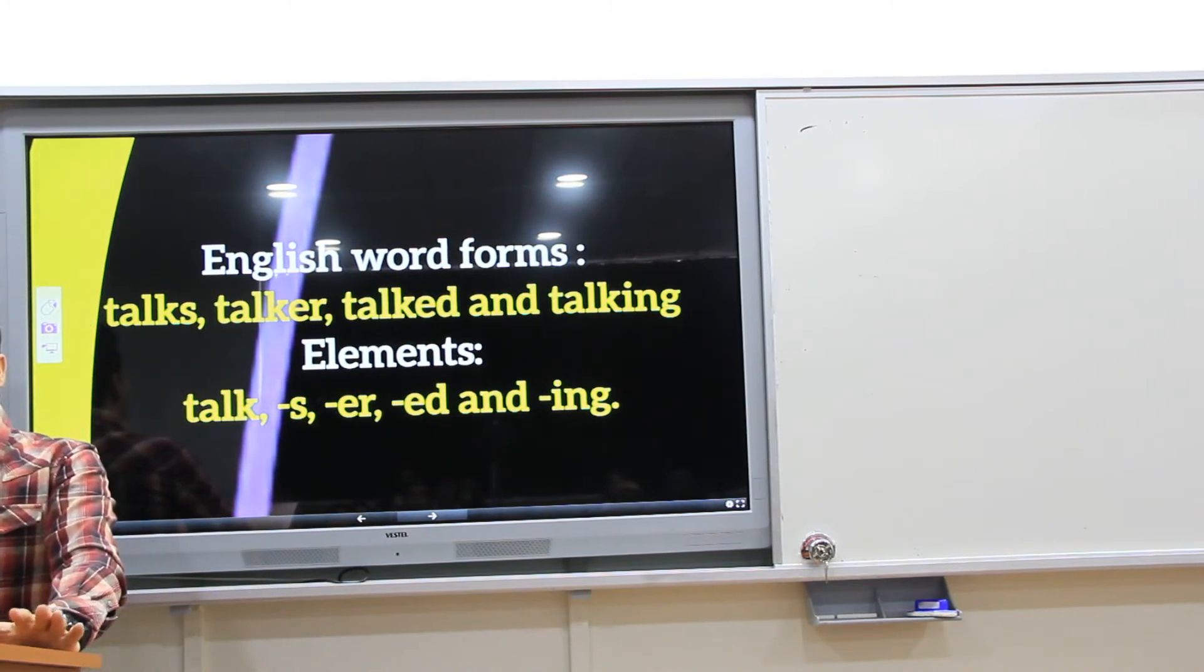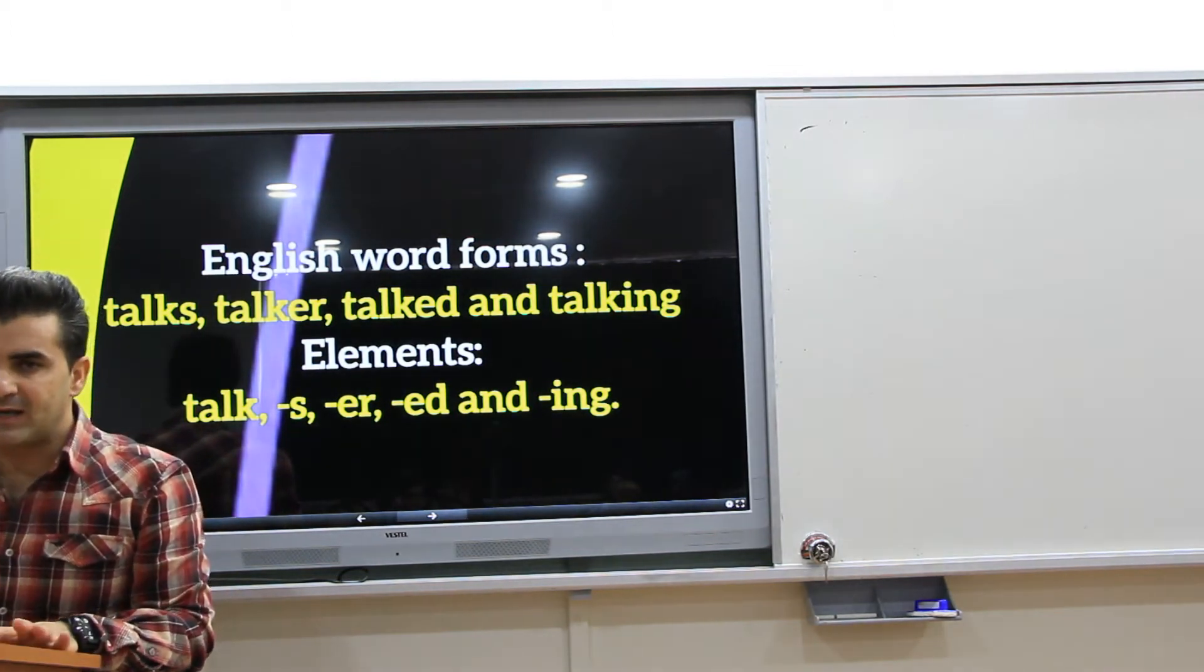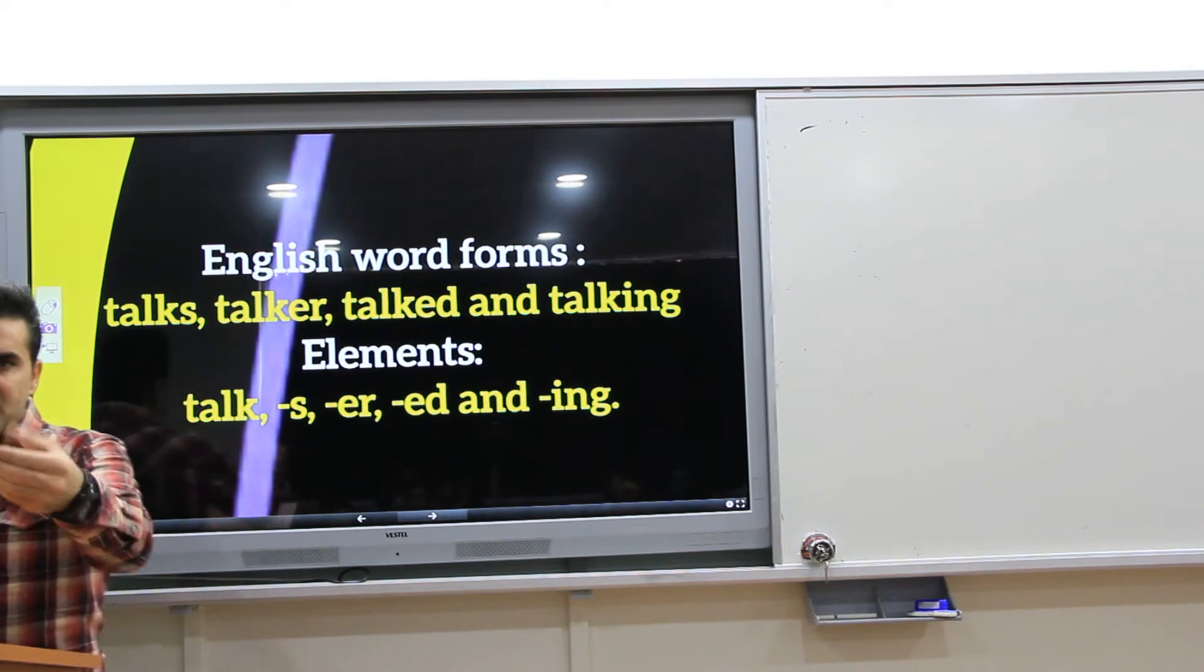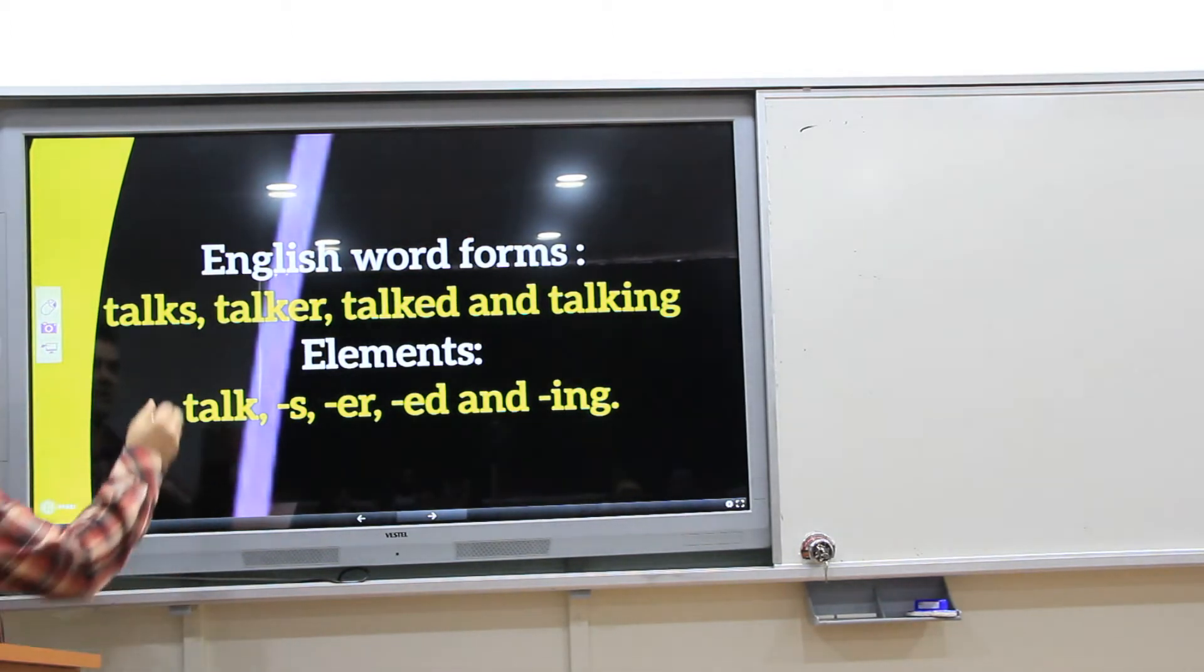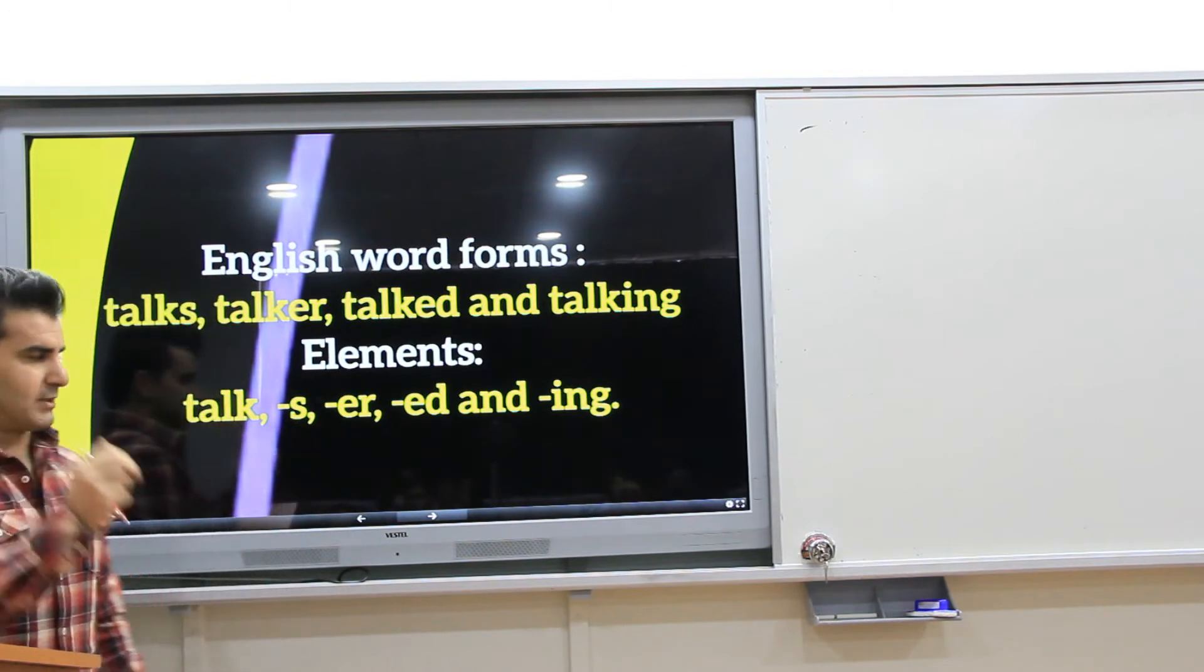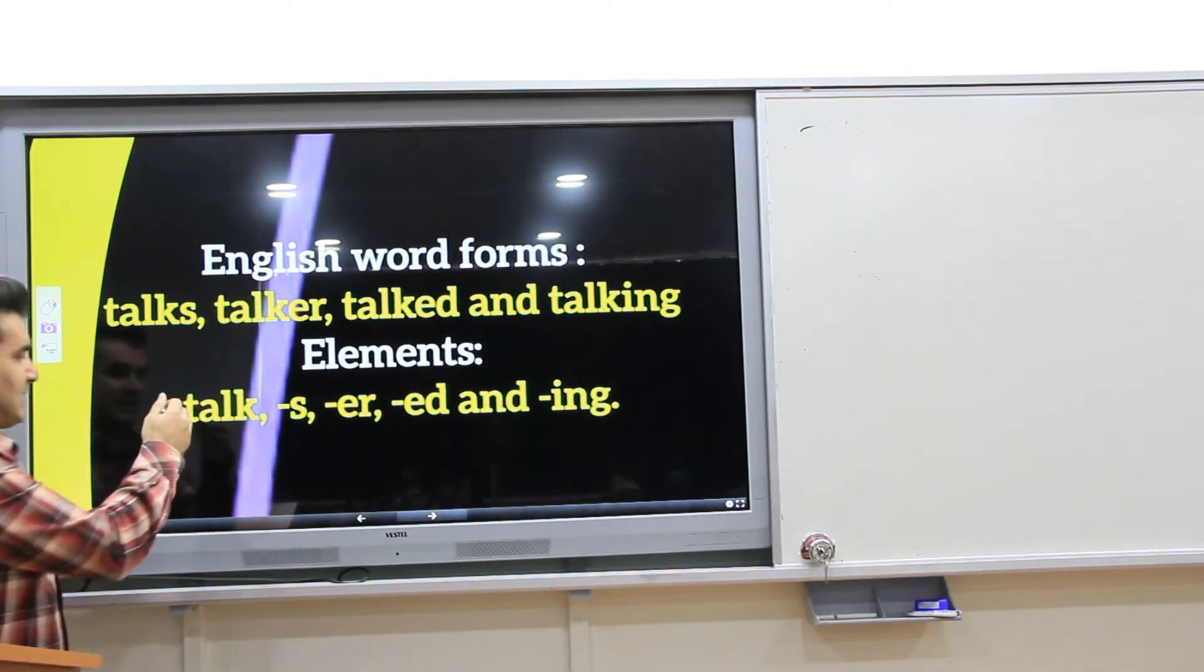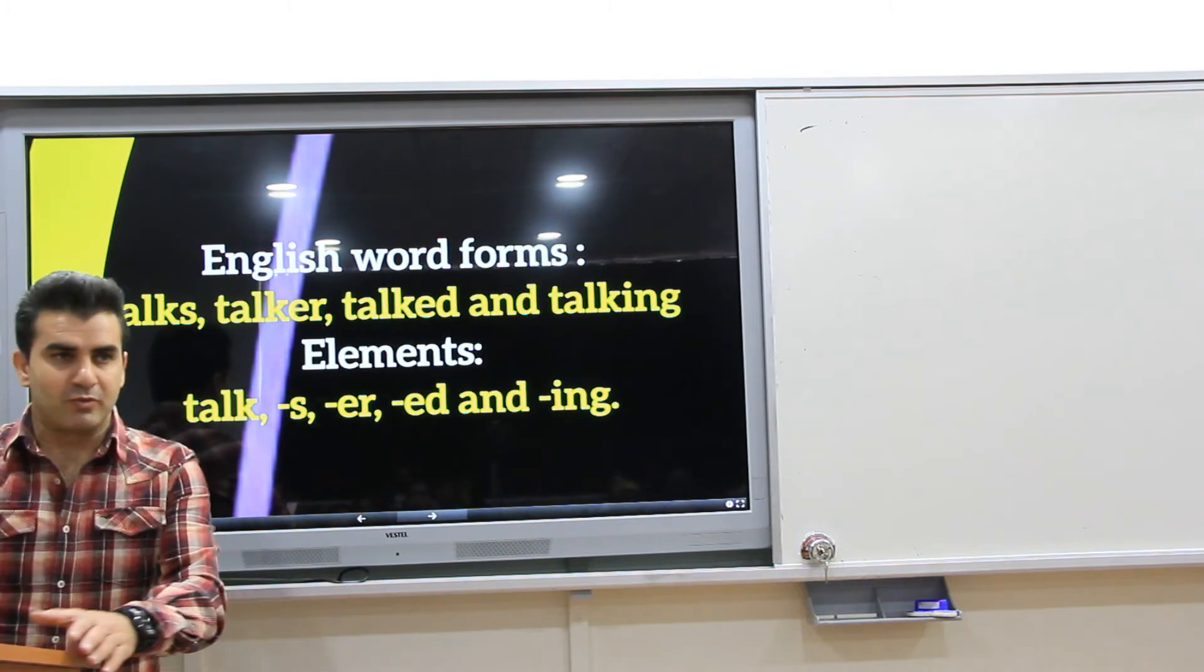Bu morfimler dediğimiz zaman, artık morfimler, bir dindeki farklı elementlerdir. Yani o gördüğümüz farklı yapıların her biri morfim oluyor. Tabi, morfimin bir alt basamağına gittiğiniz zaman, fonimler var. Fonimlerden kastımız da, mesela bu bir morfim değil. Bir elementtir. Yani bir dilde kullandığımız bir yapıdır. Bunun bir alt basamağına gittiğiniz zaman, aslında bu form, her biri bir fonimden oluşuyor. Yani t, a, l, k. Bunlardan oluşmuyor. Fonimlerden oluşuyor.